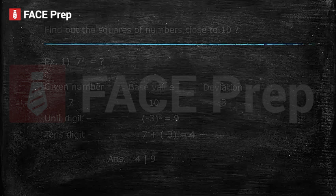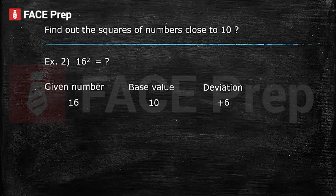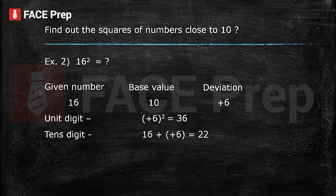Let's take one more example: find out the square of 16. Step 1: the base value will be 10. The deviation will be plus 6, because 16 minus 10 gives us plus 6. The unit digit is the square of the deviation: 6 squared equals 36. The tens digit is the addition of the given number and the deviation: 16 plus 6 gives us 22. The answer would be 3622.